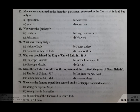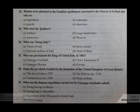What was Young Italy? Your options are A a vision of Italy, B a secret society, C the national anthem of Italy, D none of these. The correct answer is B, a secret society.